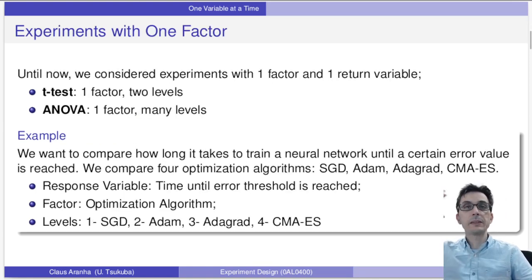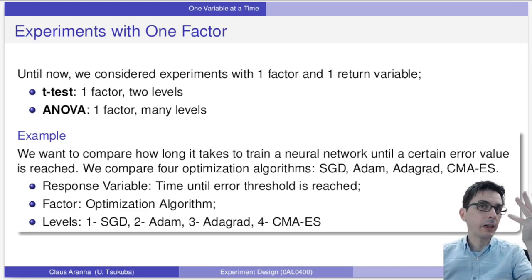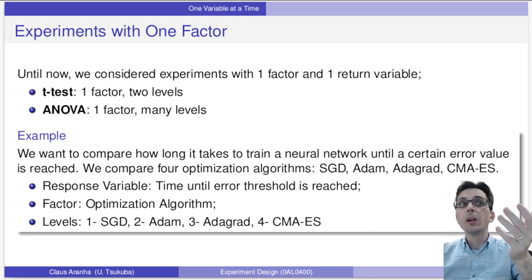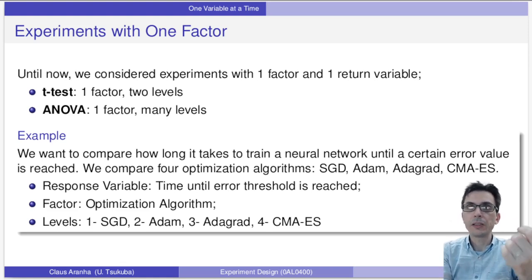Until now, we always considered experiments with only one factor and one return variable. In this case, we could use the t-test, which is one factor with two levels, for example algorithm A and algorithm B. Or we could use ANOVA, which is one factor with many levels. We have 10 kilos, 20 kilos, and 40 kilos - three levels for our one factor.